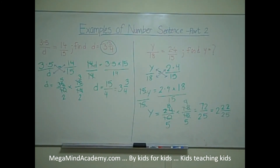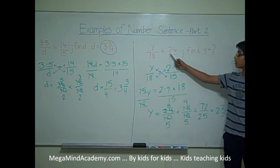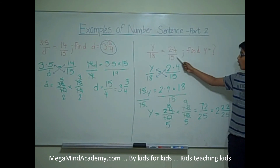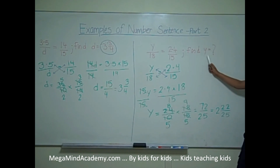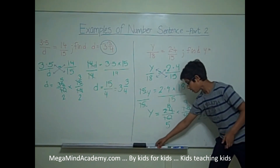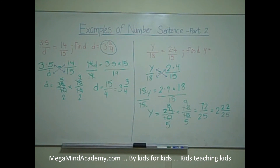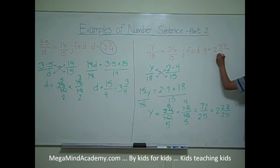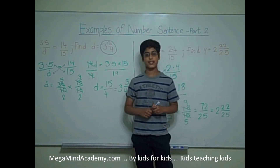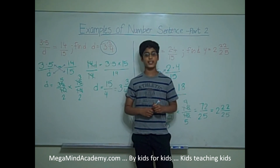So, once again, for this problem — y over 18 is equal to 2.4 over 15, find y — y is equal to 2 and 22 over 25. You can erase the question mark and put down 2 and 22 over 25. Today we learned about examples of number sentences, Part 2. Thank you for watching this video.